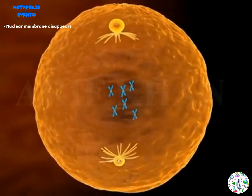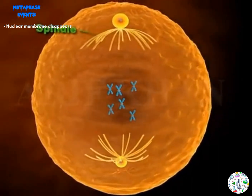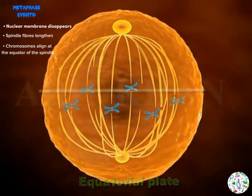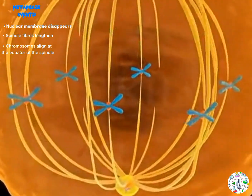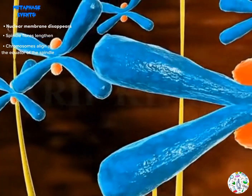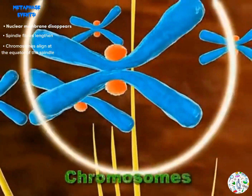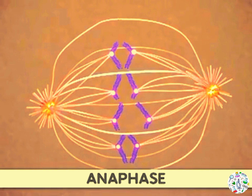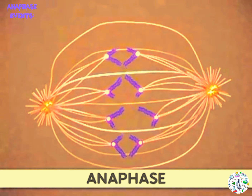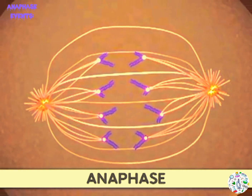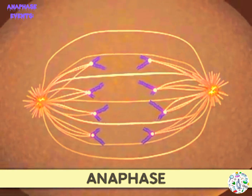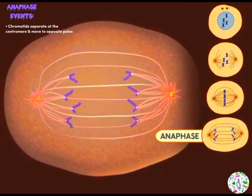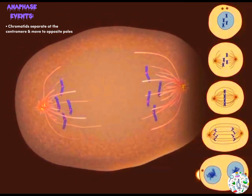Proceeding to the next stage — metaphase. By this stage the nuclear membrane has completely disappeared. The spindle fibers lengthen and the chromosomes align themselves at the equator, meaning they arrange themselves at the center of the cell. The chromosomes are attached to the spindle fibers by their centromeres. In the next stage, anaphase, the spindle fibers shorten, pulling the chromosomes so that the chromatids are forced to separate at the centromere, with each chromatid being pulled to opposite poles of the cell.